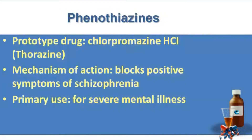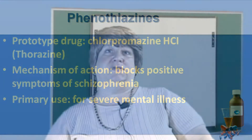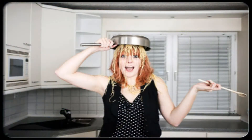Our phenothiazines — our prototype is chlorpromazine or Thorazine. Its mechanism of action is to block positive symptoms of schizophrenia, and it is primarily used for severe mental illness. Adverse effects can include acute dystonia, akathisia, Parkinsonism, tardive dyskinesia, anticholinergic effects, sedation, hypotension, sexual dysfunction, and neuroleptic malignant syndrome.